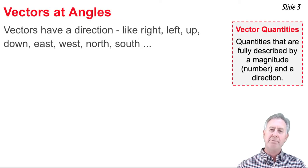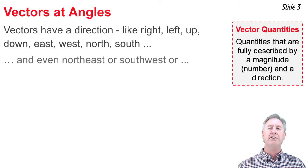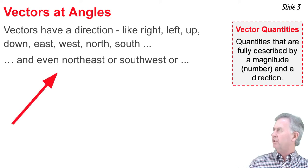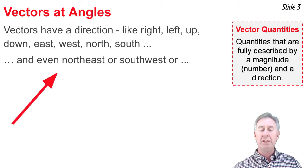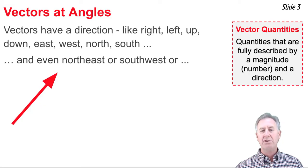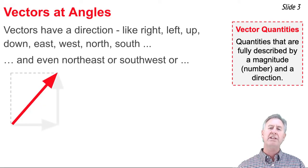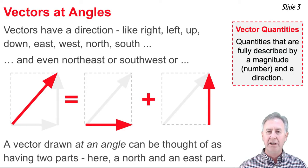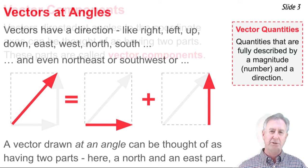Vectors are those quantities that have a magnitude and a direction. When it comes to the direction, we could describe the direction of a vector as being right or left or up or down, even north, south, east, and west. And we can even have vectors that are southwest or northeast. Like this vector that you see here, on a map we would describe that as a northeast vector. And as a northeast vector, we think of it as consisting of two parts. One of the parts is a north part, and the other part is an east part.